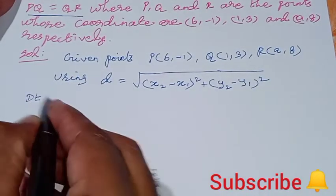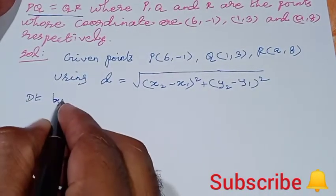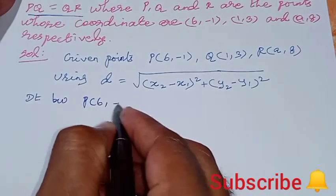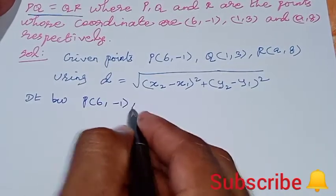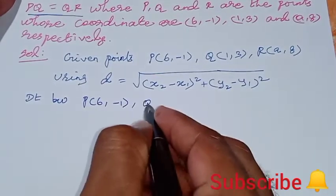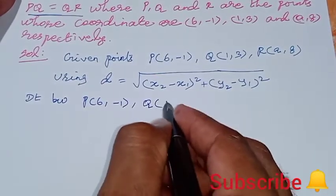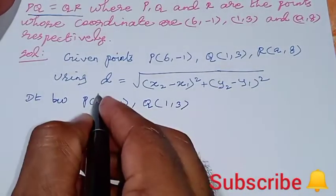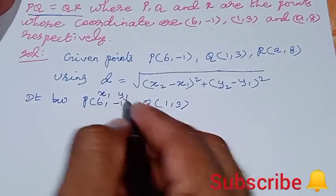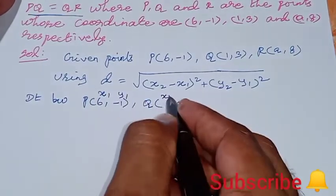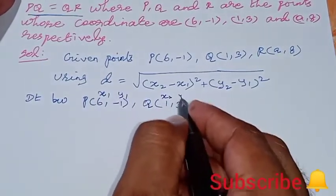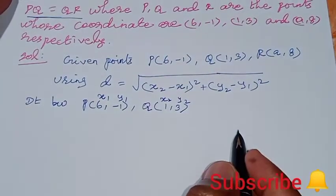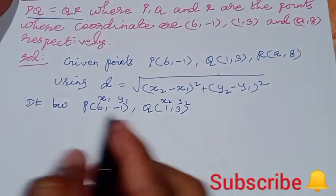First, the distance between P, inner point (6, -1), and Q, inner point (1, 3). The first point we take as x1, y1, and the second point we take as x2, y2.